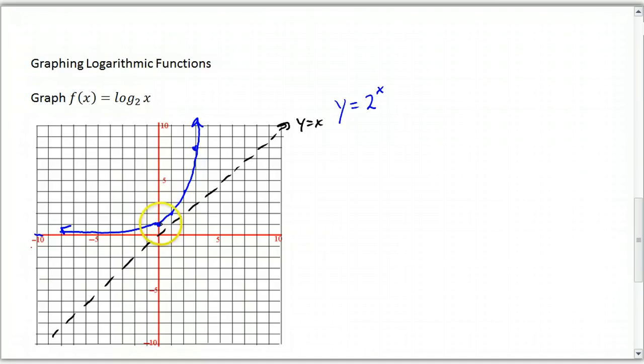And so this point at 0, 1 now goes to 1, 0. This point at 1, 2 goes to 2, 1. This point at 3, 8 goes to 8, 3.